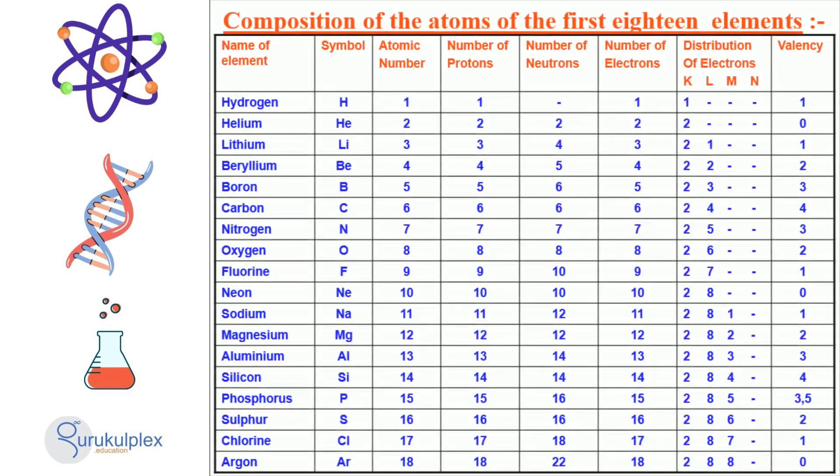The table in this slide presents the atomic structure of the first 18 elements, comprising the name, symbol, atomic number, number of protons, neutrons and electrons, as well as the distribution of electrons in the shells K, L, M, N and the valency of the element. This information provides us with a better understanding of the structure of the atom and its behavior in various applications.